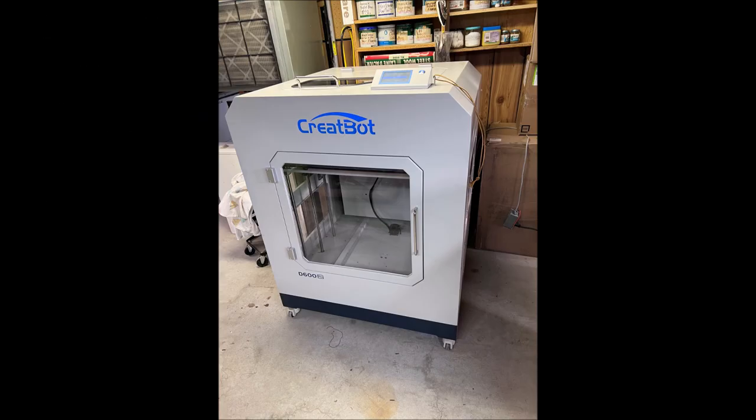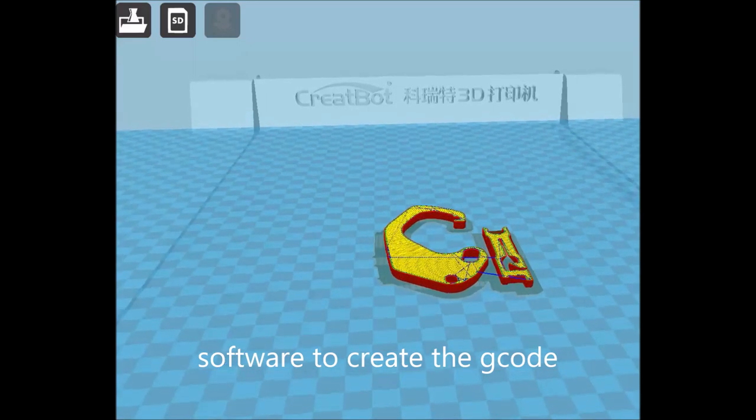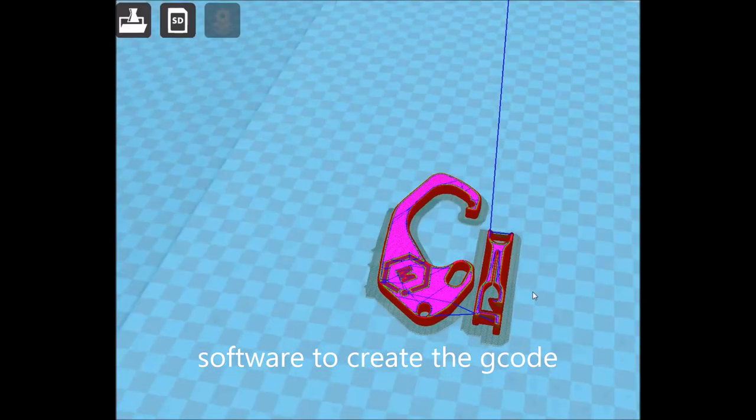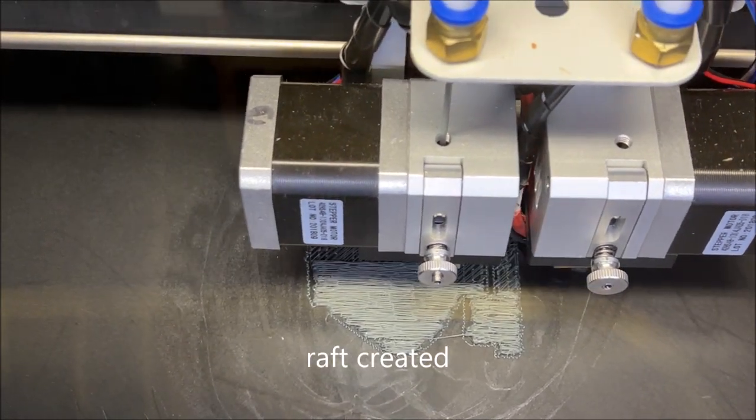The printer I'm using is a large format printer. Before I create the g-code for the printer, I like to run it through the printer software just to see how the file is going to look while it's being printed.